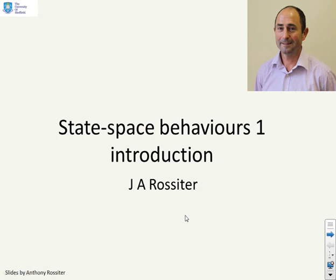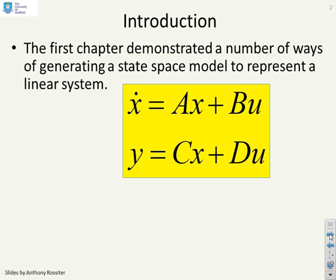This is the first video on state-space behaviors. The first chapter demonstrated that there are a number of ways of generating state-space models to represent linear systems. We describe state-space models using this form: the derivative of the state vector X, written as X dot, is equal to some matrix A times the vector of states X plus some matrix B times a vector of inputs U. And you can also find the outputs as Y equals some matrix C times the state vector X plus some matrix D times the input vector U.